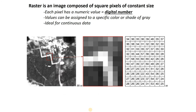A raster is an image composed of square pixels of constant size, and each of those pixels has a numeric value called a digital number. Here you see all the square pixels each with its own number. These numbers can represent any kind of data.